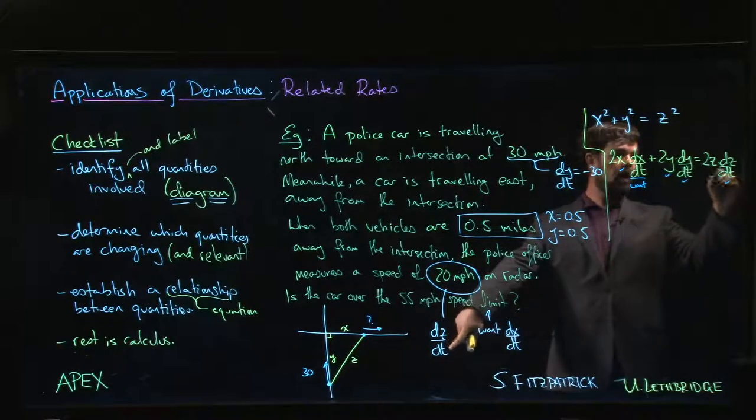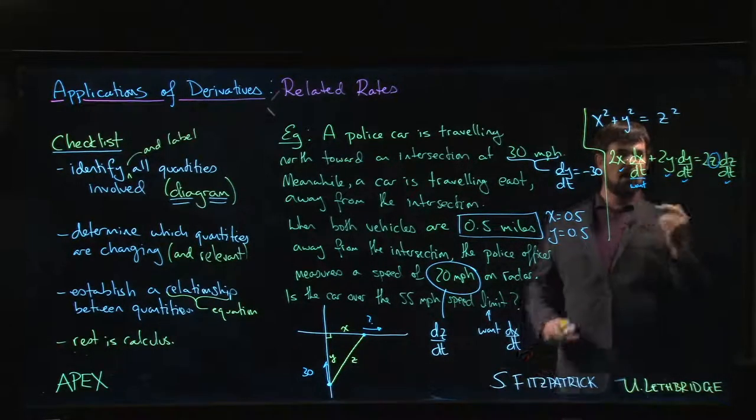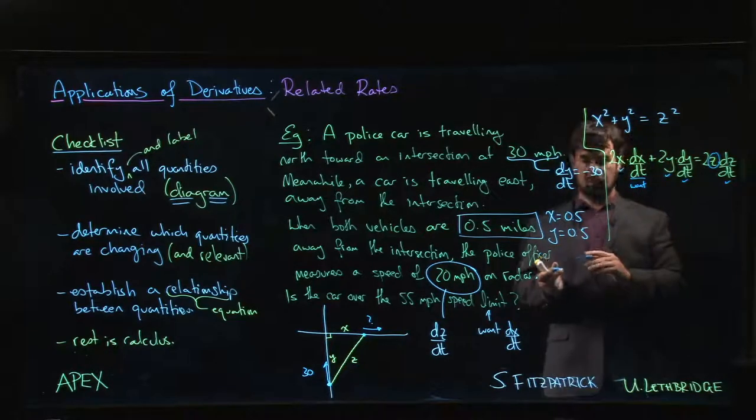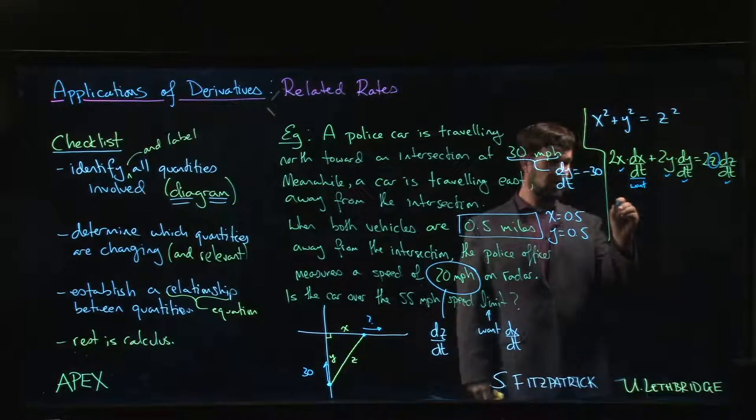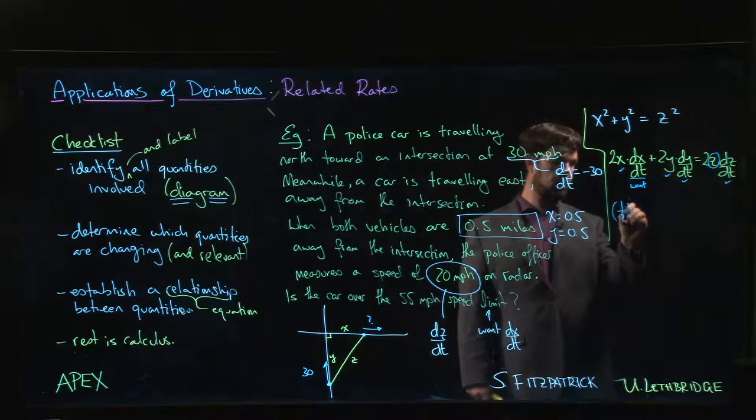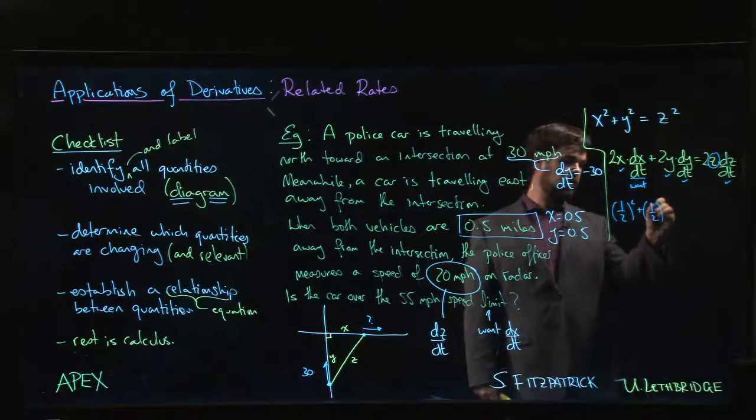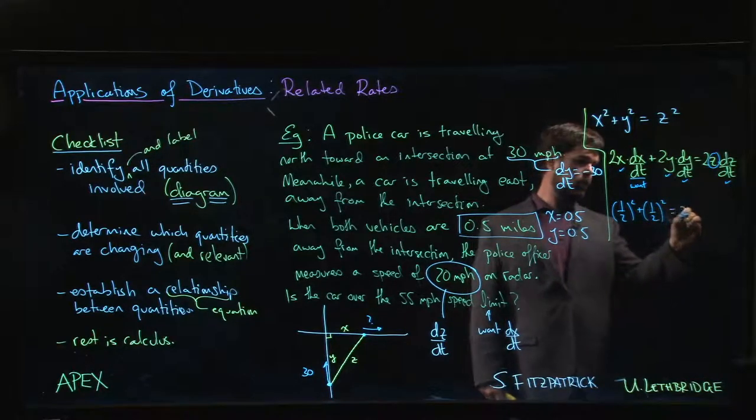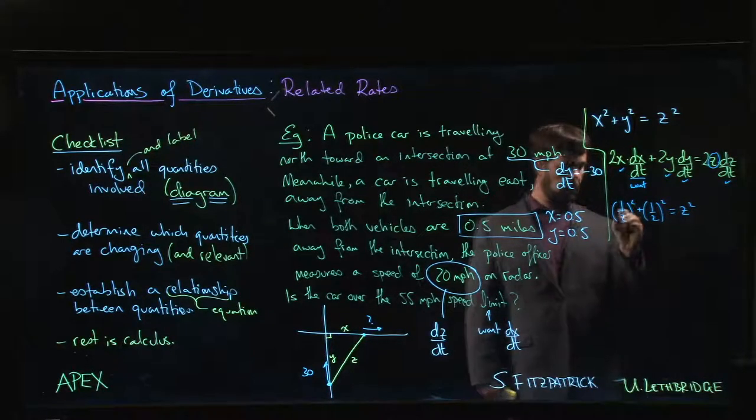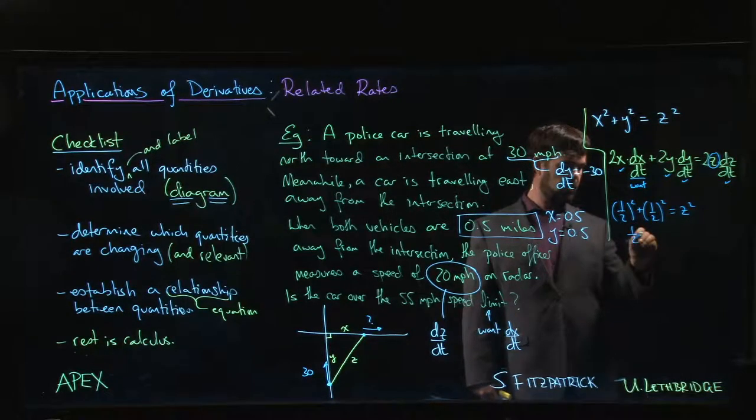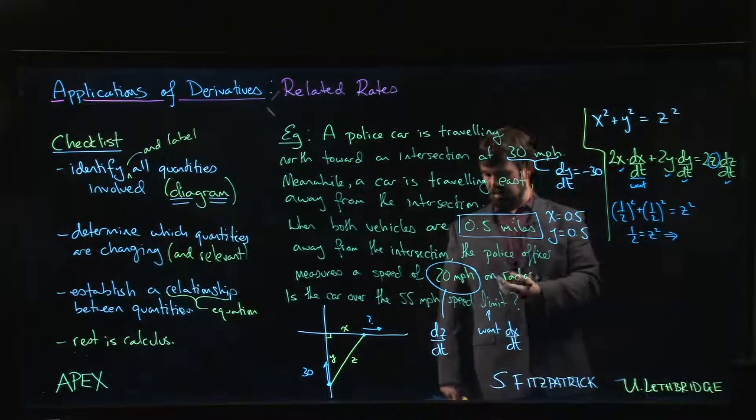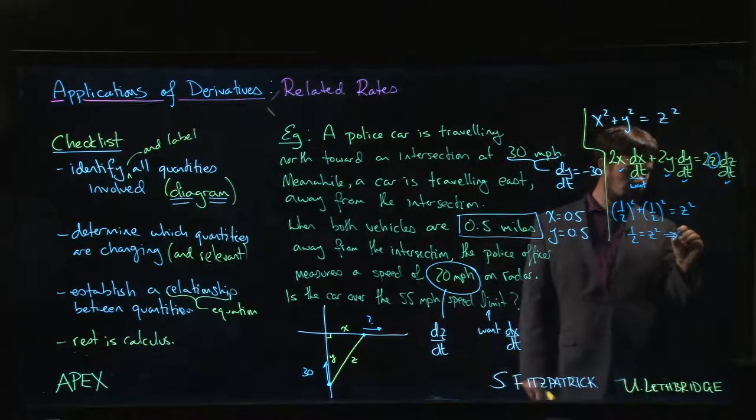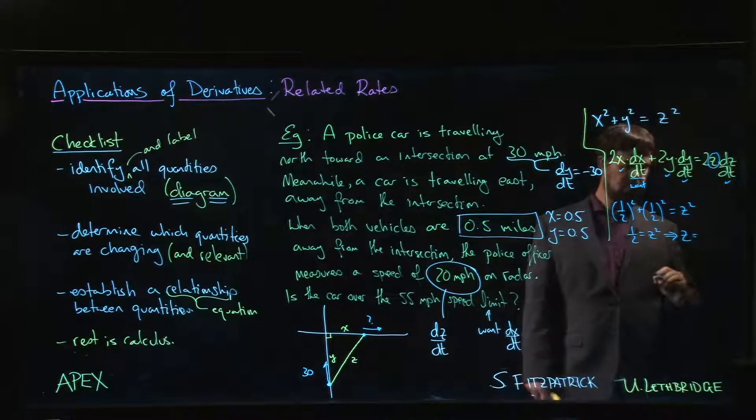Well, now what we do is we come back to the original equation. We say at that moment in time when x and y are both equal to 0.5, we have that (1/2)² + (1/2)² = z². So 1/4 + 1/4 = 1/2, so 1/2 = z². This implies that at the moment when the measurement is taken, z is equal to 1 over the square root of 2.